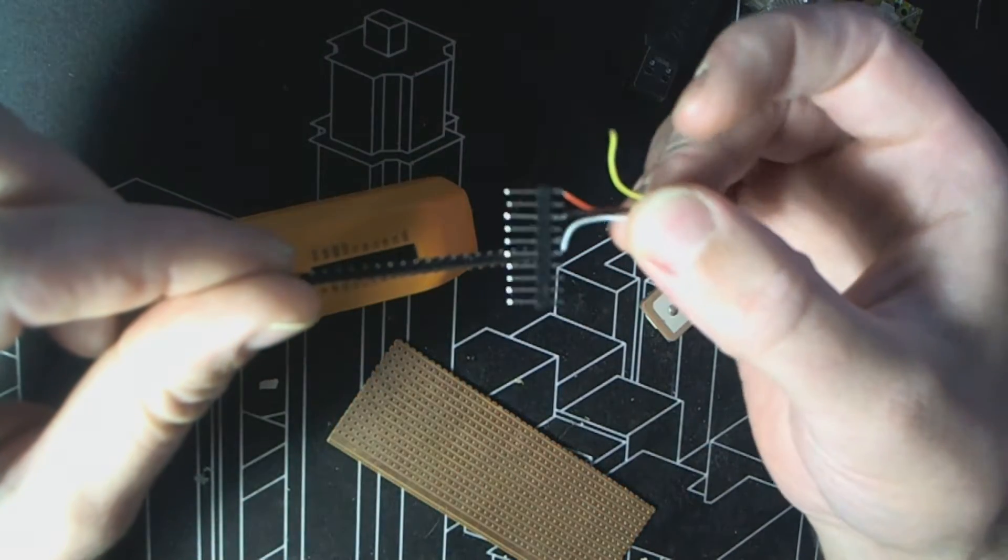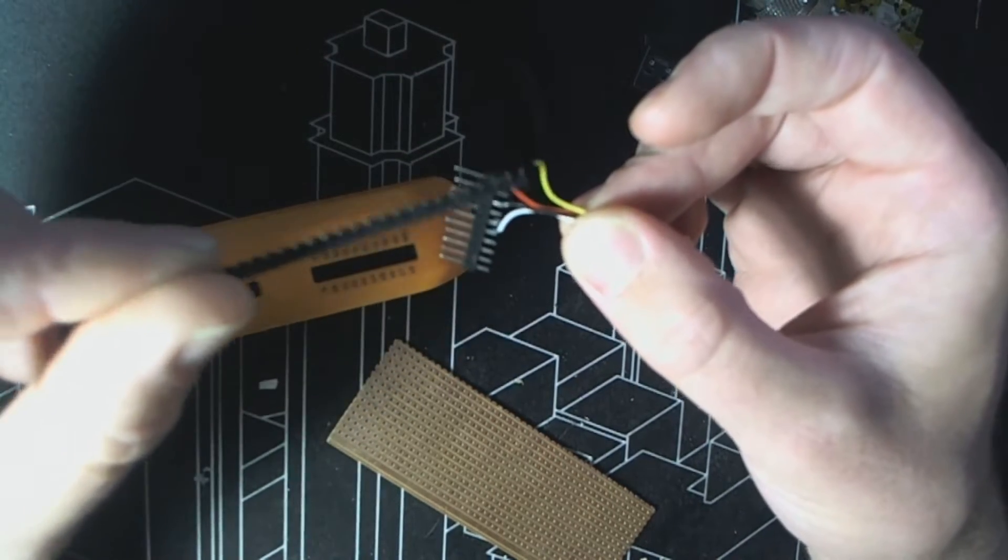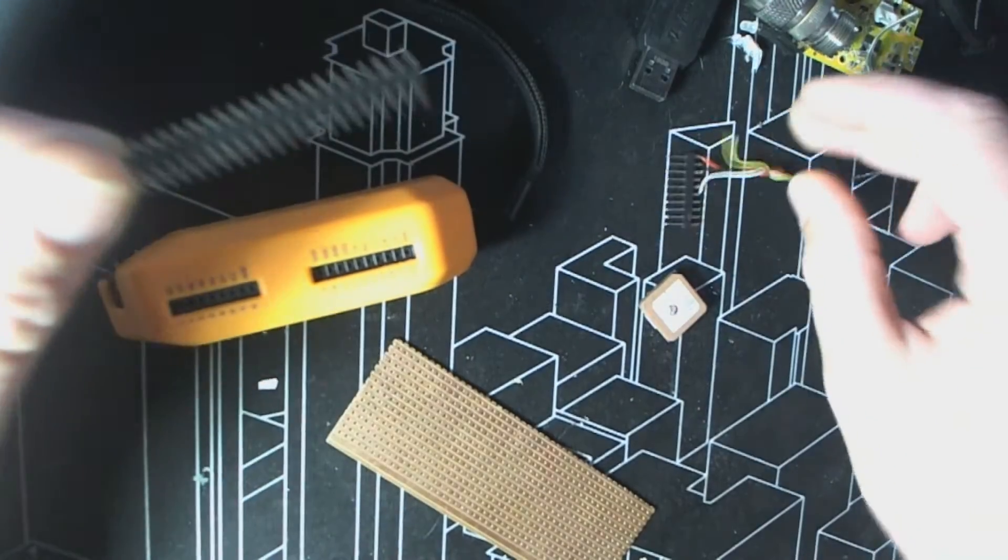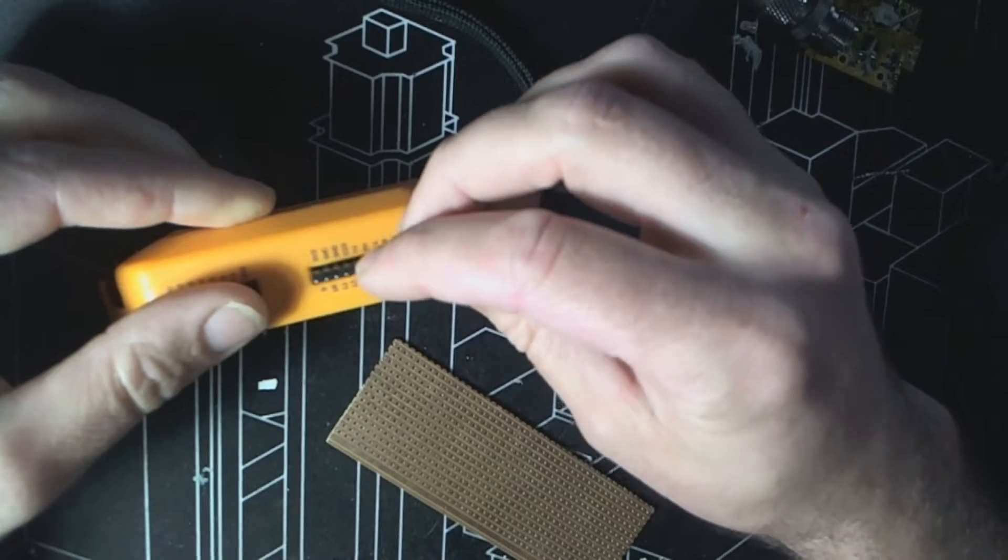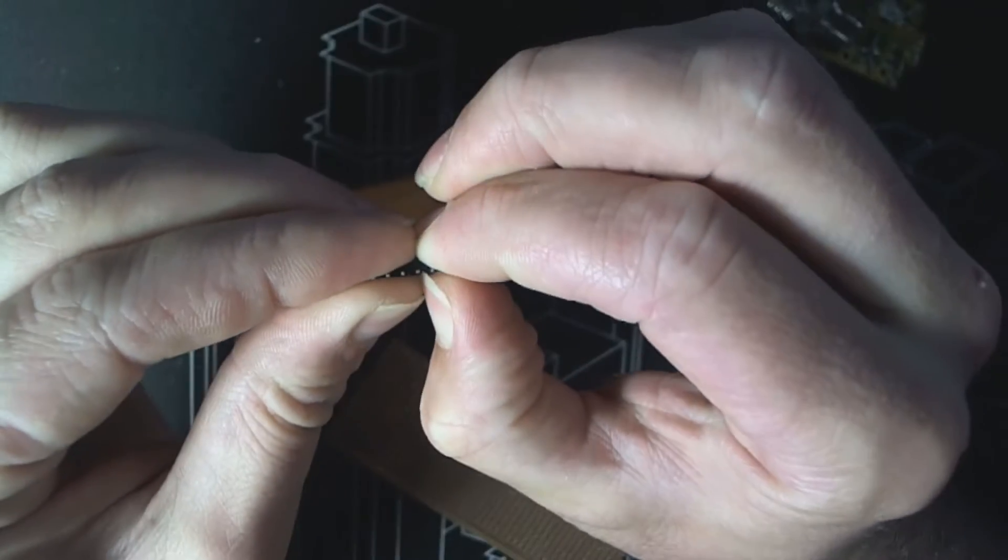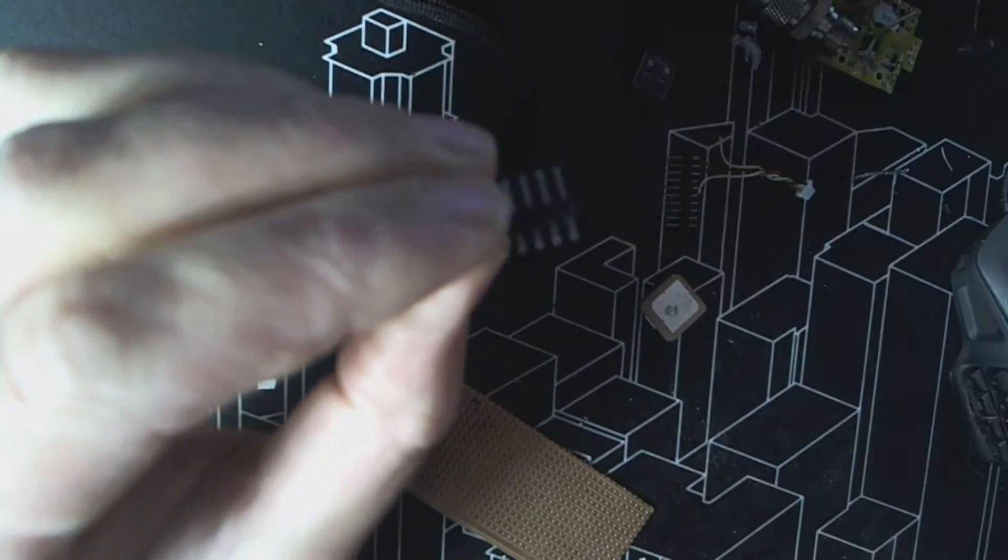If we have a look here, this is our harness. We need 3.3 volts, a ground, and then a data transmit and receive. So here, we want to limit that to only those pins right there.